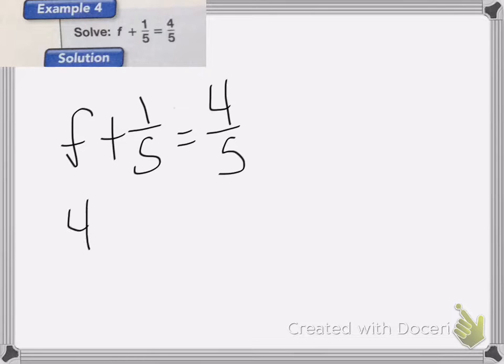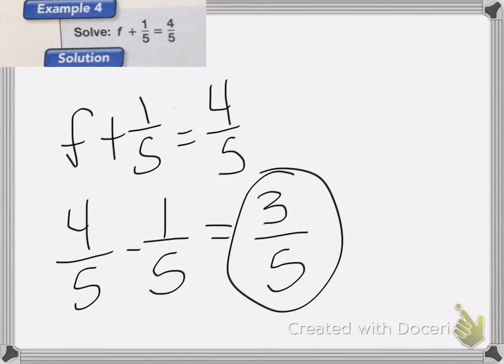4 fifths minus 1 fifth is 3 fifths. So that is what F equals. And if you're not sure, you can plug that back into the equation. 3 fifths plus 1 fifth is equal to 4 fifths. And so that is correct.